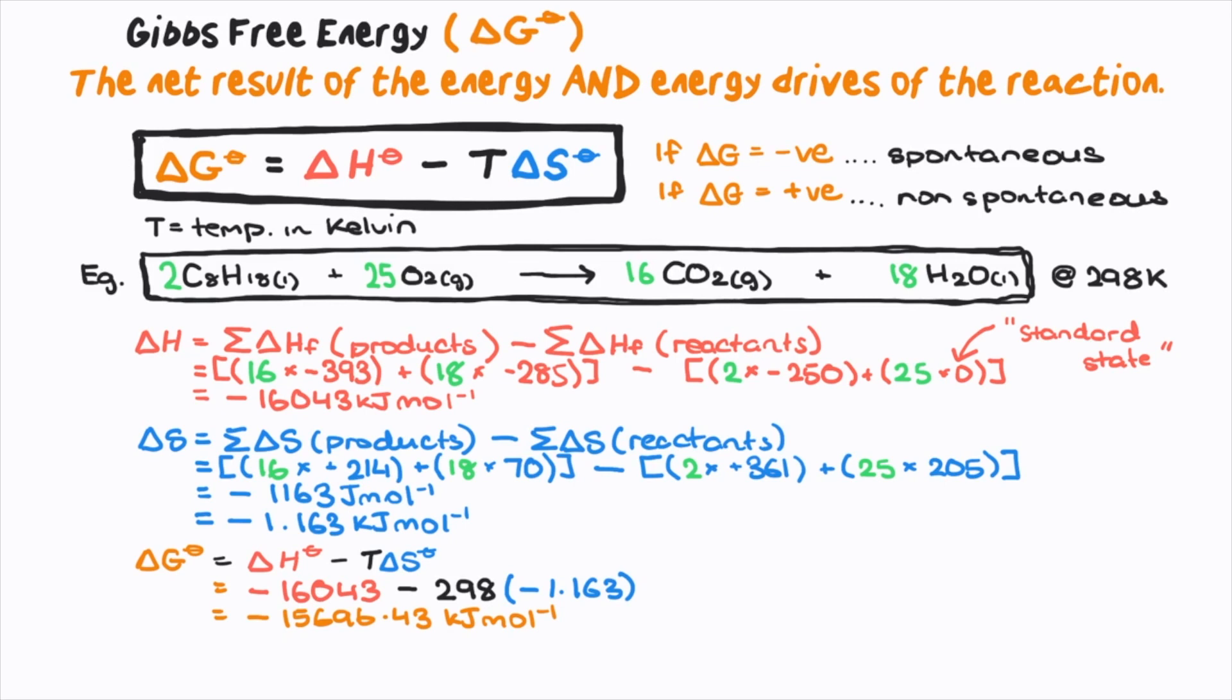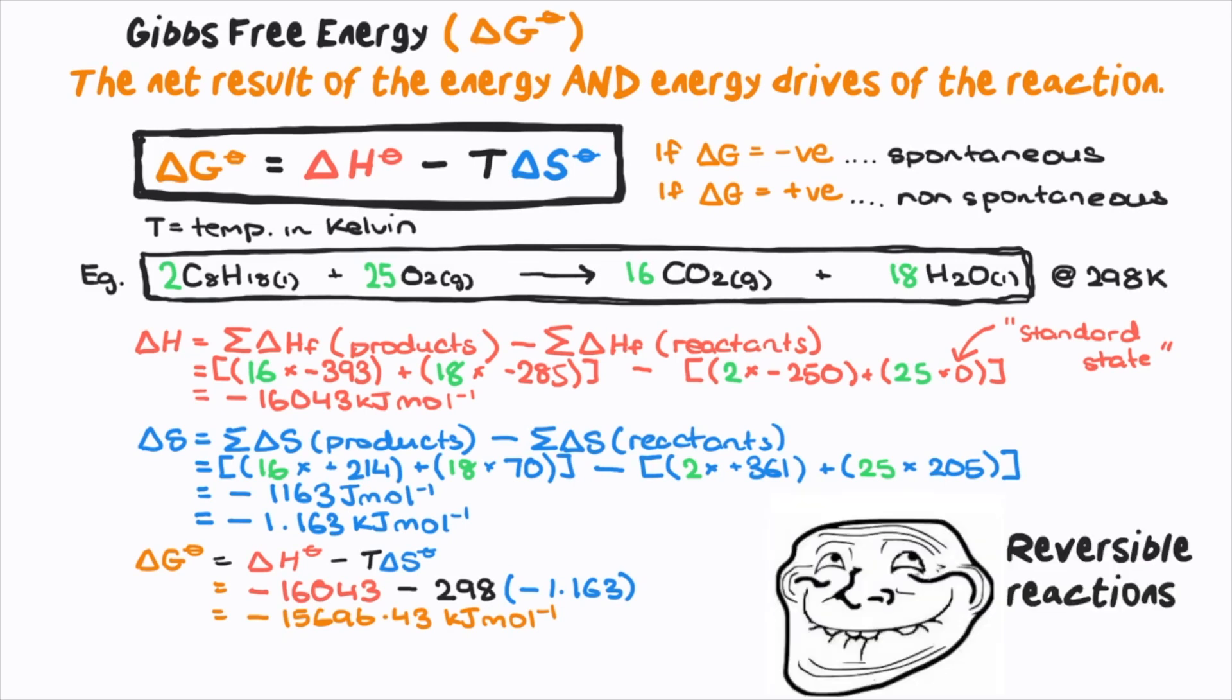A value close to zero would indicate that the reactants could form products, but at the same time the products could react to form the reactants. Therefore there could be two reactions occurring at the same time. These are known as reversible reactions.